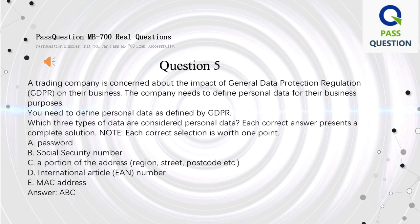Question 5: A trading company is concerned about the impact of General Data Protection Regulation (GDPR) on their business. The company needs to define personal data for their business purposes. You need to define personal data as defined by GDPR. Which three types of data are considered personal data? Each correct answer presents a complete solution. A: Password. B: Social security number. C: A portion of the address region (street, postcode, etc.). D: International article number. E: MAC address. Answer: A, B, C.